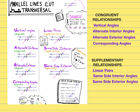We also have a couple of relationships that create a supplementary relationship, which means those are equal to 180 degrees. Those three are linear pairs, same side interior, and same side exterior.